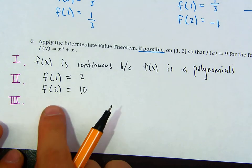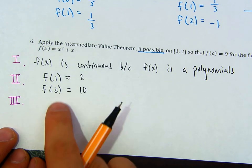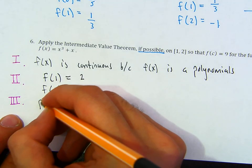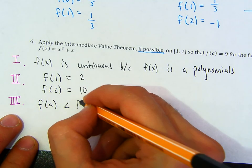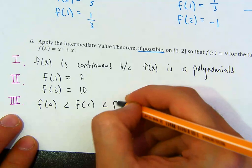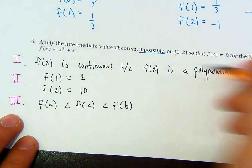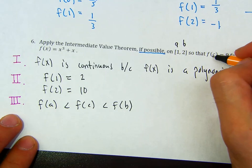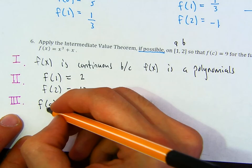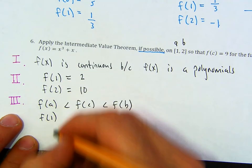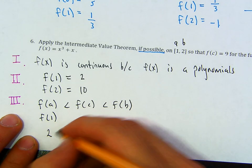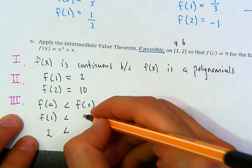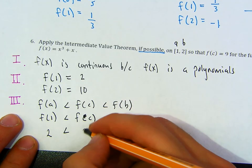Now try the third condition. For the third condition, you have to show that f of a is less than f of c, which is less than f of b. Anytime you have the interval, this is your a, this is your b, and this is c. So f of a is f of 1, which is 2. f of c is 9. f of b is f of 2, which is 10.